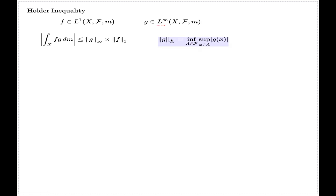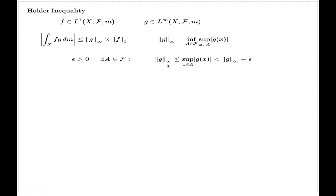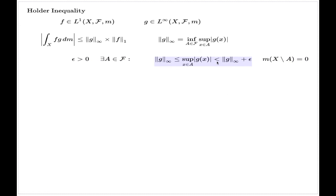Here is a very simple proof. All we have to do is interpret what this means — interpret this infimum. That means that for any positive epsilon, there is a measurable set A such that we have control over the supremum of G over the set A, and also the measure of the complement is zero. This infimum is taken over all measurable subsets for which the complement has measure zero — that is the definition of the essential supremum, or the definition of the norm here.